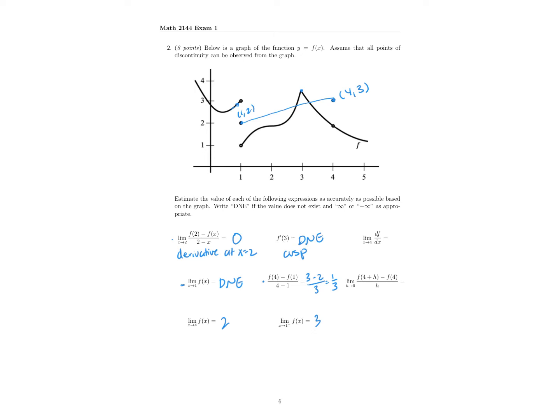The limit as x is approaching 4 of df/dx is a little tricky. Remember, df/dx is already the derivative function. At x equals 4 we have a discontinuity, so we can't actually differentiate the function there. But they're asking what the limit of the derivative is as x approaches 4. If we find the slope of the tangent line assuming the point was continuous — it looks like 5 is at about 1 and 4 is at about 2 — so the slope is about negative 1. We go down negative 1 over positive 1, giving us a slope of negative 1.